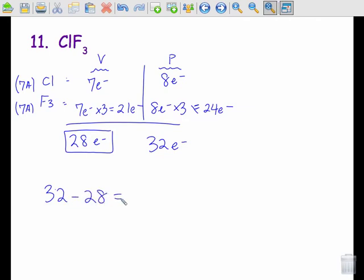To figure out the number of bonds, I do 32 minus 28, which gives me four. And divided by two gives me two bonds.